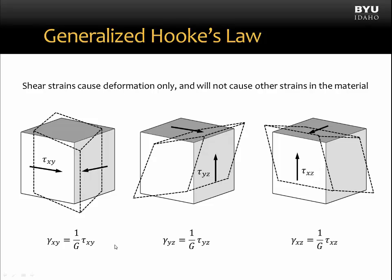Now let's consider shear strains. We have equations for Hooke's Law for shear stress and strains — the shear strain is equal to one over the shear modulus times the shear stress. What we found is that shear strains cause deformations only, or changes in the element shape, and shear strains in one plane will not cause shear strains to develop in other planes. Therefore, we do not have generalized Hooke's Law equations for shear strain.